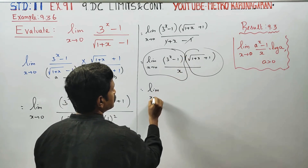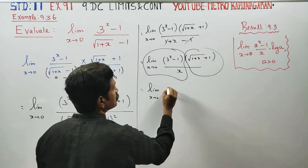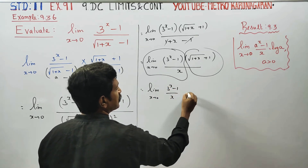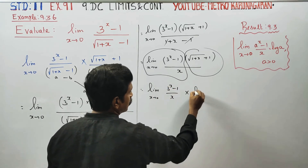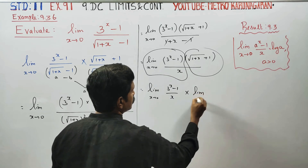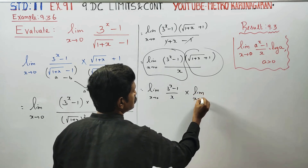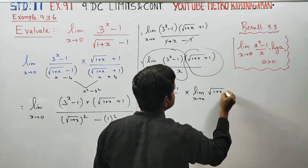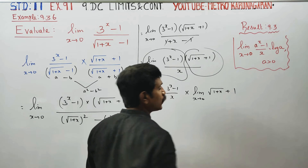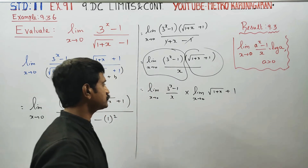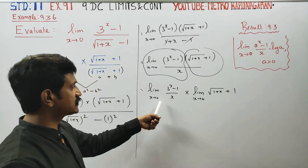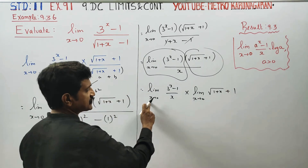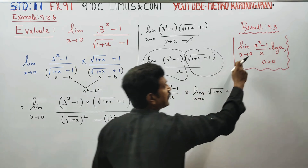Limit x turns to 0 of (3^x - 1) / x, multiplied by limit x turns to 0 of (√(1+x) + 1). Using the limit multiplication rule, we split the expression into these two separate limits.